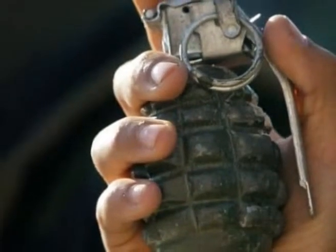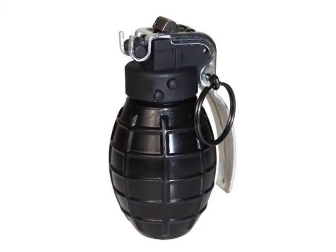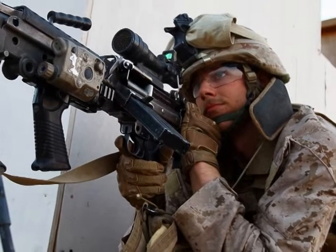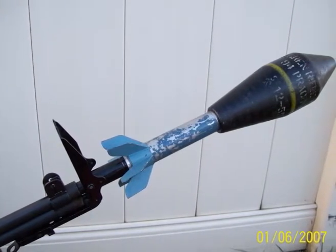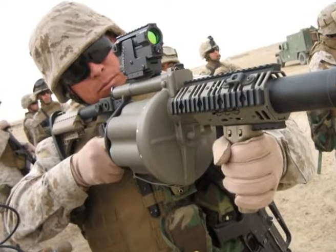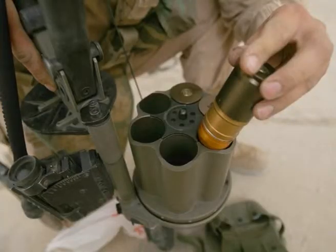Hand grenades are hand-thrown devices that contain explosive or biochemical filler. A grenade has three chief zones: a body, a fuse with a pull ring and safety clip, and filler. Categories of grenades include fragmentation, smoke, chemical and radiance grenades. Rifle grenades are grenades attached to a tube that fits over a rifle barrel. Special explosives are used in the rifle to provide the force necessary to propel the grenade to the target. Rifle grenades characteristically comprise high explosives, white phosphorus, riot control means, illumination flares or chemicals that generate coloured or screening smoke, and typically have impact fuses on the nose or rear.